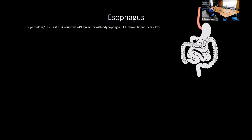A 35-year-old male with HIV (CD4 of 49) presenting with odynophagia, and EGD showing linear ulcers — that's CMV esophagitis. Biopsy shows atypical lymphocytes with intranuclear inclusion bodies — the classic 'owl eye' appearance. Treatment is IV ganciclovir.